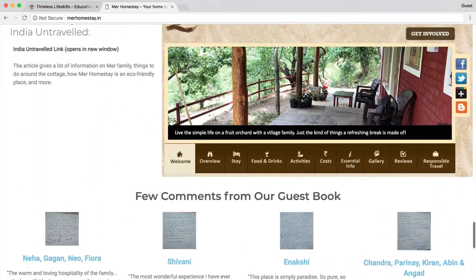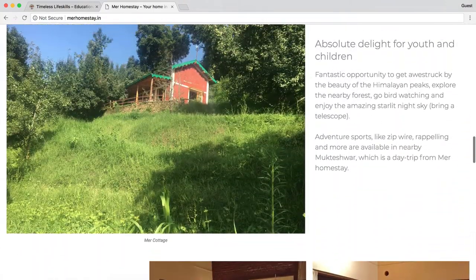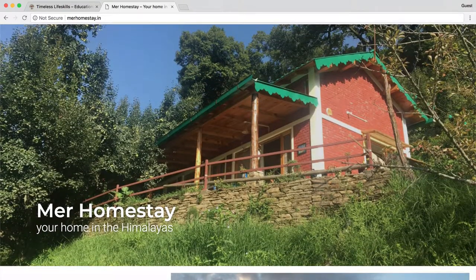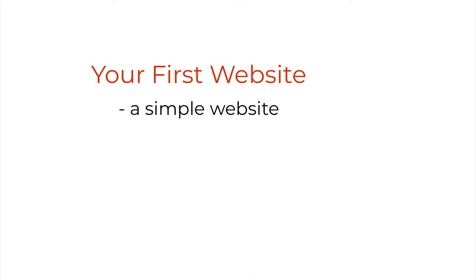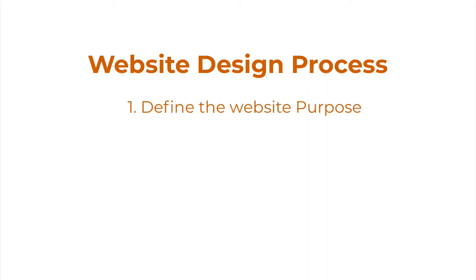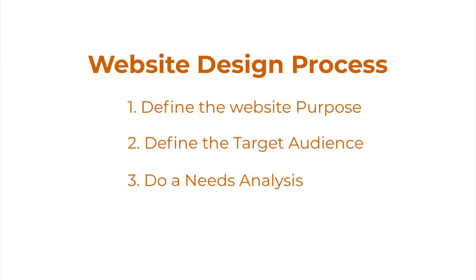As Anand's homestay business grows, he can invest in creating a more elaborate website and perhaps even offer online bookings and payment — that is, make the website e-commerce enabled. But for now, a simple website serves his purpose. The first website you design for your school could be a simple one-page website like this one that gives the audience a good sense of what your school is all about. Later you can add more pages, but even for a simple one-page website you will still have to follow the website design process: define the purpose, define your target audience, and do a needs analysis. To translate these needs into a design, you will then create a rough storyboard with the text and images you will use. In the next video, we will look at how to create such a storyboard.